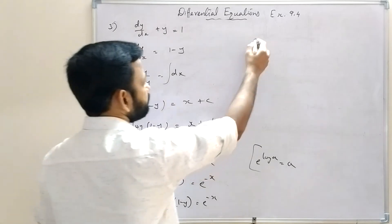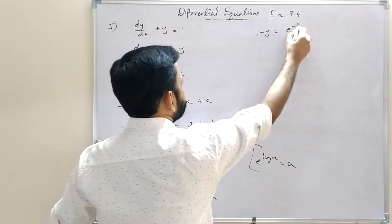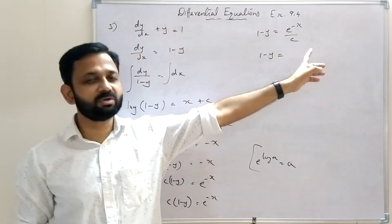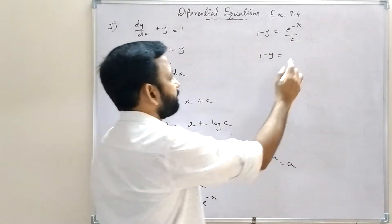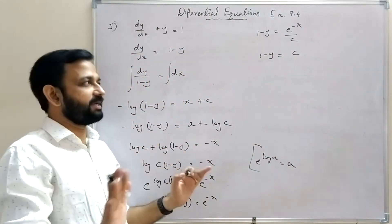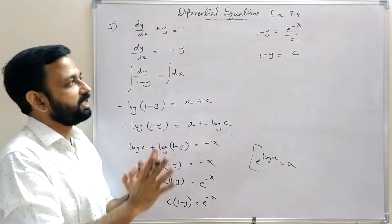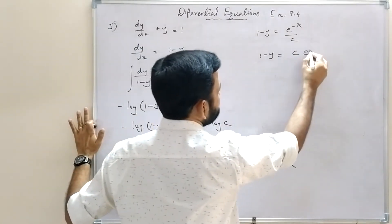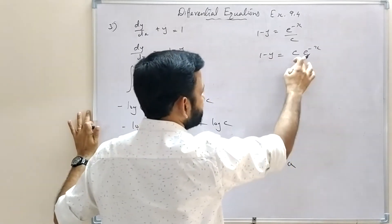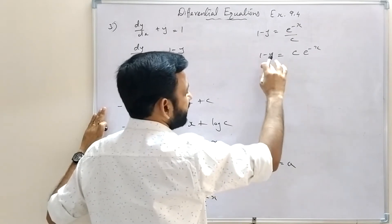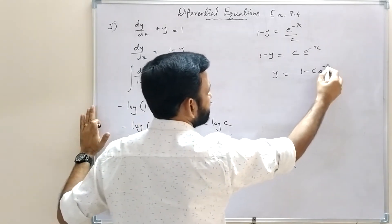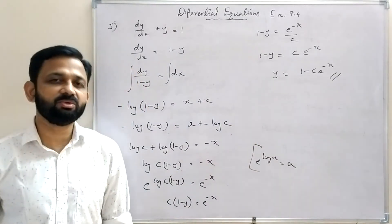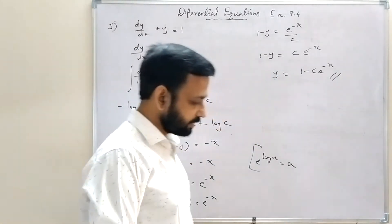Since 1/c is also an arbitrary constant, we replace it by c. So 1 - y = ce^(-x), giving y = 1 - ce^(-x). This is the solution of dy/dx + y = 1.